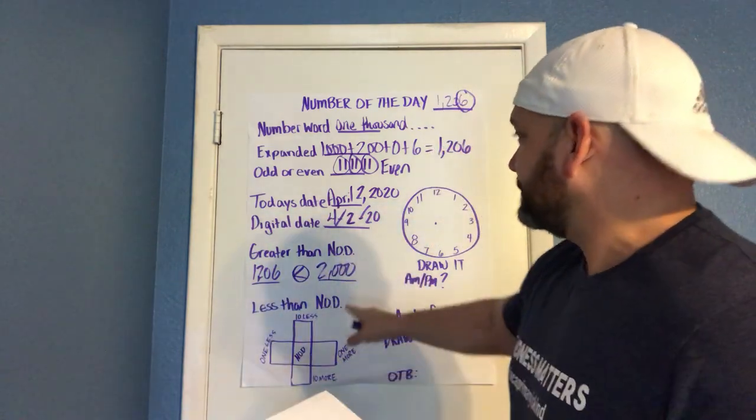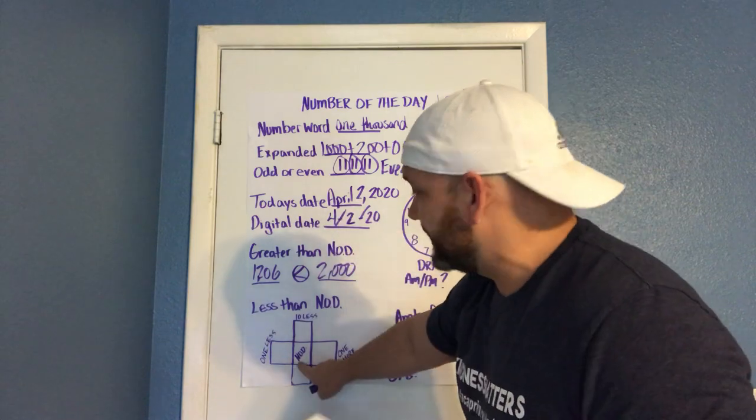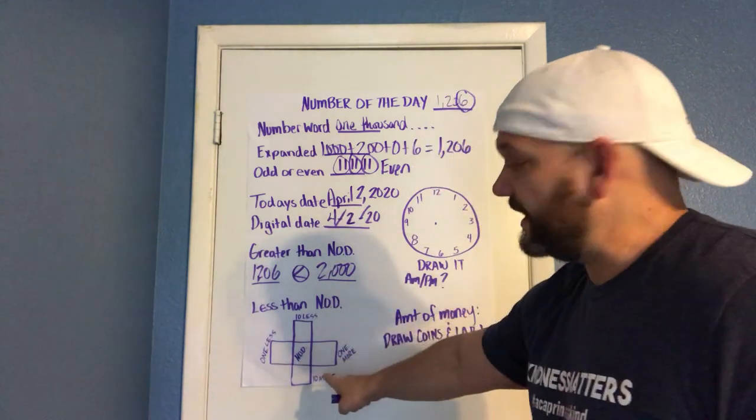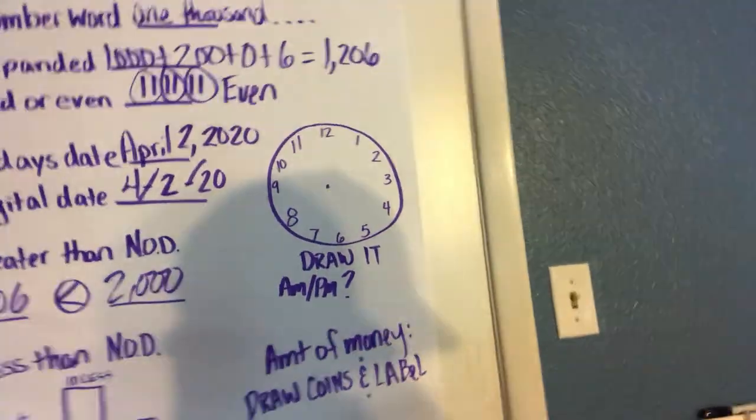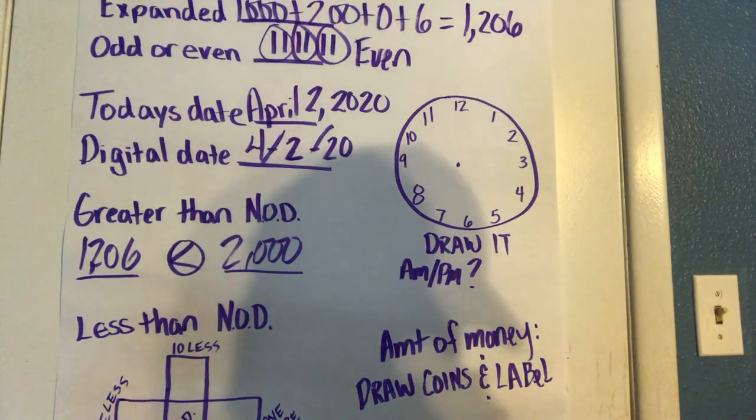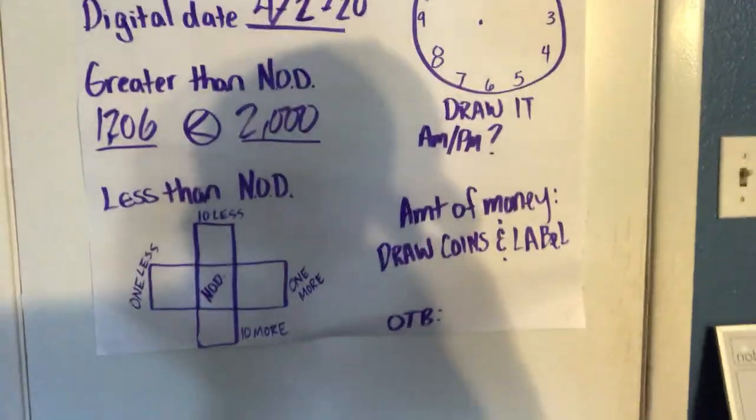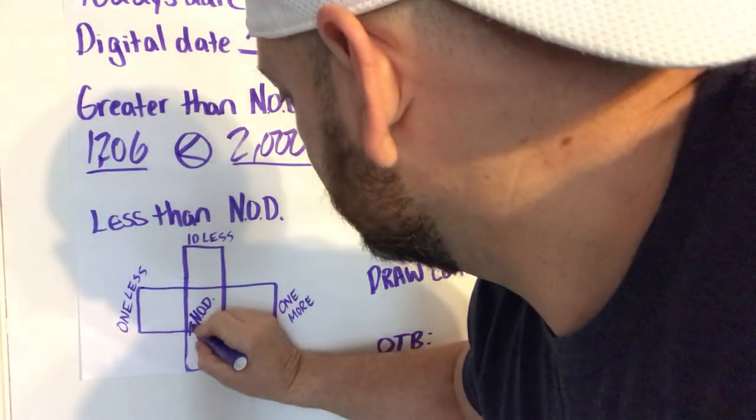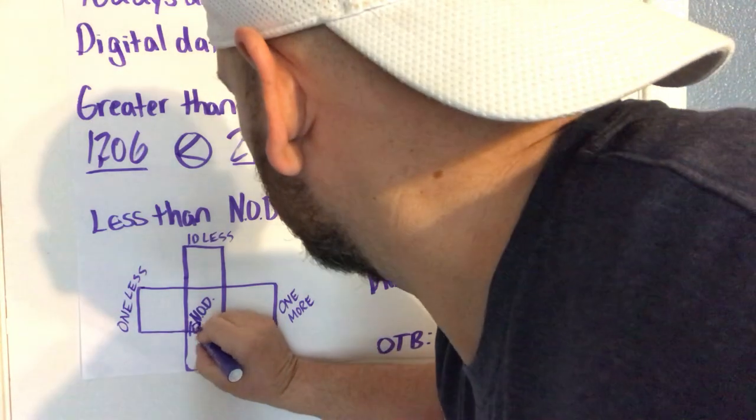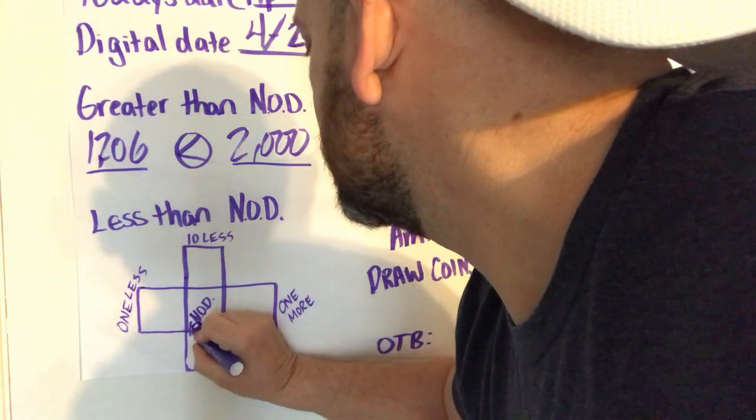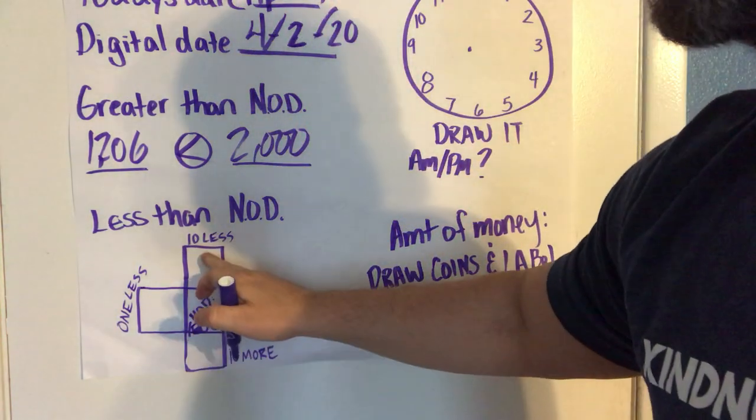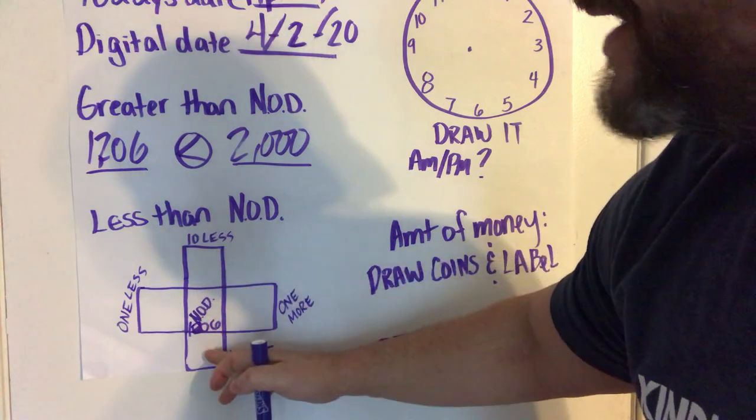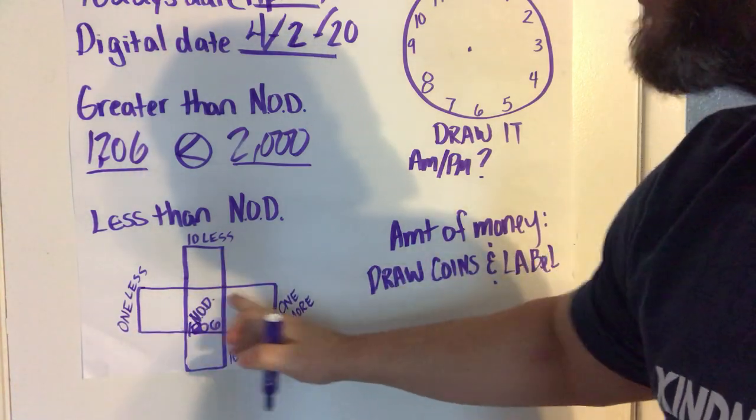We also take the number of the day, we stick it in the middle. This would correspond to a number chart, I'm not sure if you can see that or not, I'll pull it a little bit closer and adjust my stand here. So we would stick 1206 here, and 10 less they would figure that out, 10 more, one less and one more, just like a number chart.